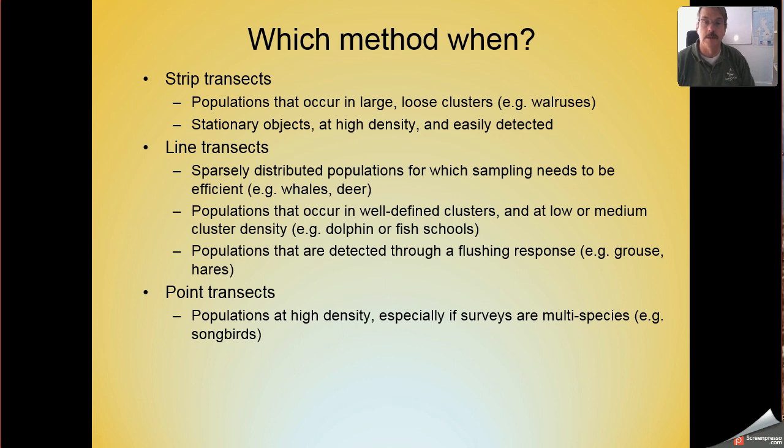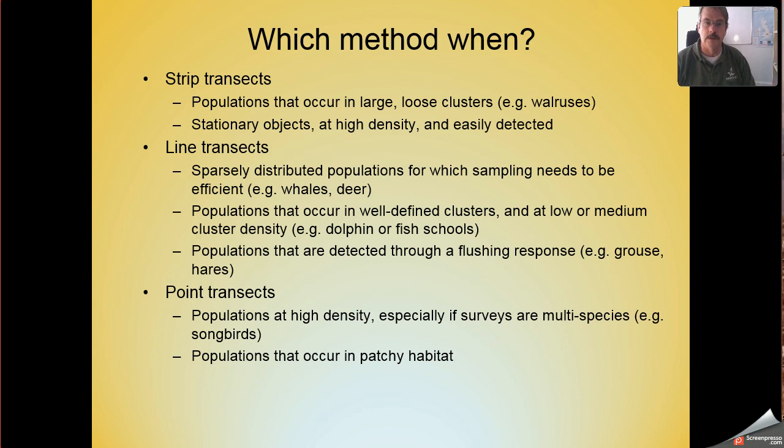Point transects are best used when populations occur at high densities and when you are trying to collect data on a number of species simultaneously. And so multi-species surveys for things like songbirds, where you not only have to detect their distances, but you also have to classify the individuals by species.